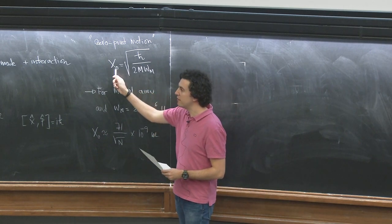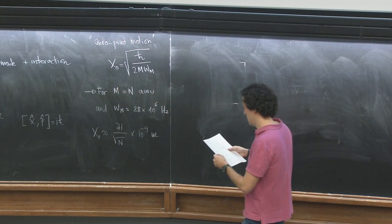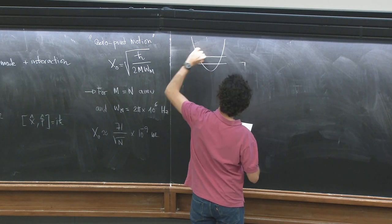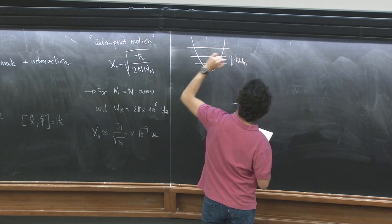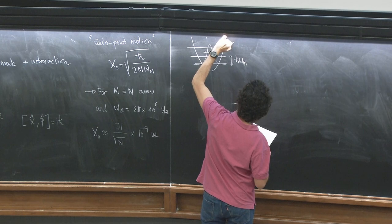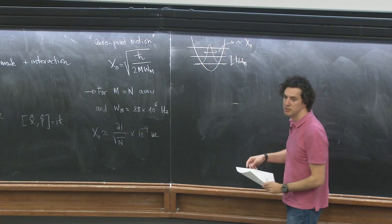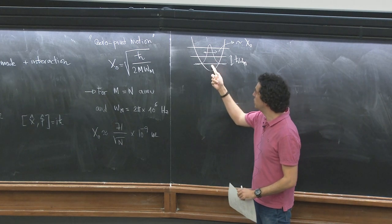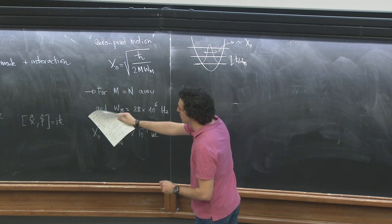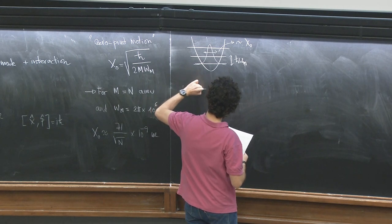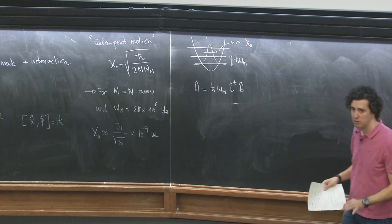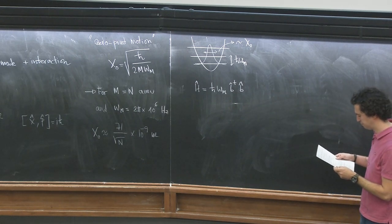This parameter x₀ is very relevant and will appear throughout the discussion. If you would cool such a harmonic potential to the ground state, the ground state is a Gaussian wave function, and its size is comparable to the zero-point motion. The center of mass of this massive object, if cooled to the ground state of this harmonic potential, will have a size given by the zero-point motion.